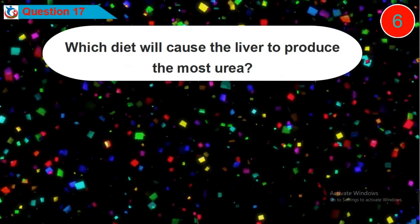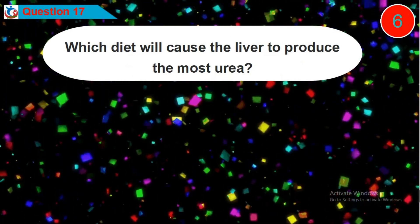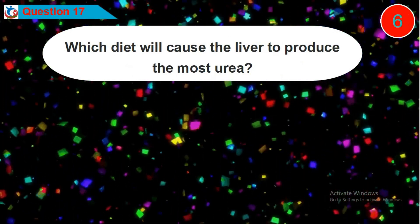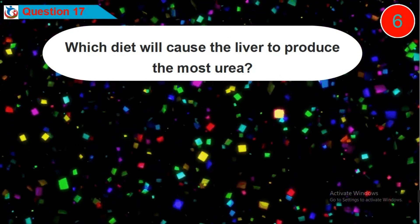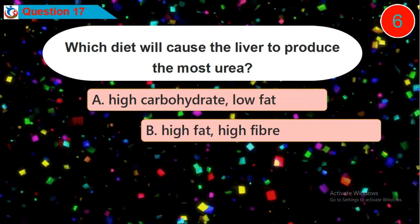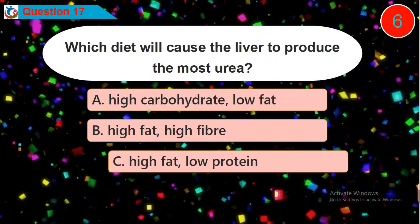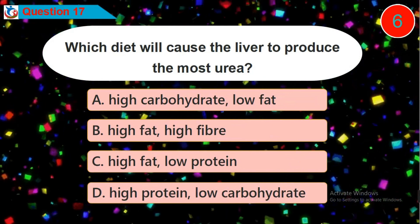Question 17: Which diet will cause the liver to produce the most urea? Is it option A, B, C, or D?